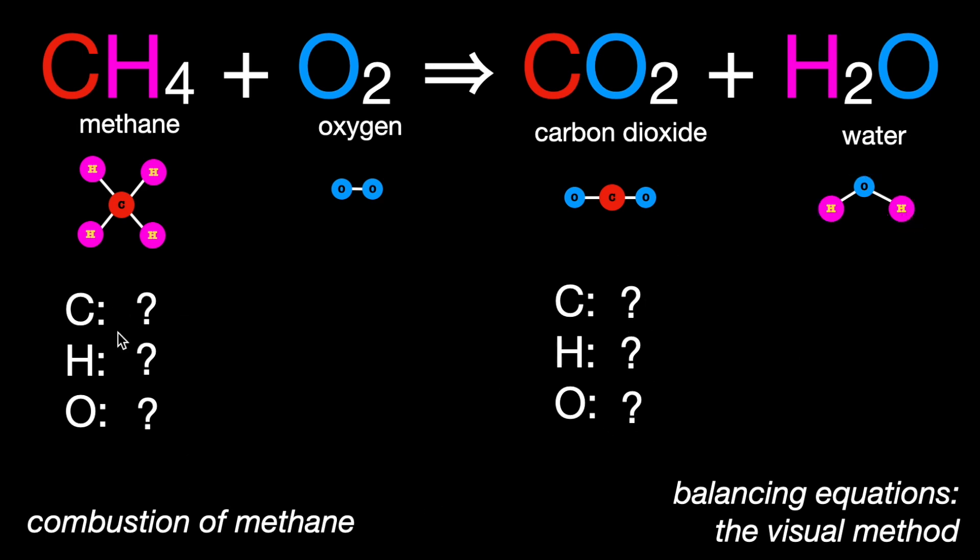Down here we have the atoms that make up the molecules on top, and we're just going to simply count them up to see where we start. Carbon, we can see we only have one molecule of methane, so there's just one atom of carbon. There are four atoms of hydrogen around it. Over here, on this side of the equation, there is oxygen only in this molecule, and there are two. Moving over to the products side, we also have one carbon atom here. Hydrogen, we have two over here on the water side, and the oxygen, it looks like we have three spread across the two molecules over here.